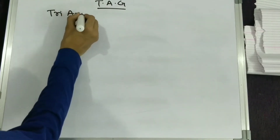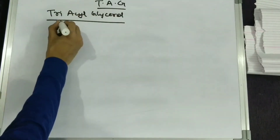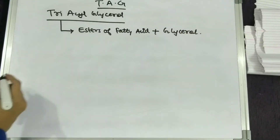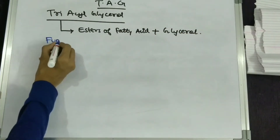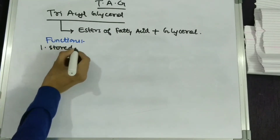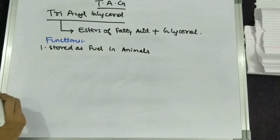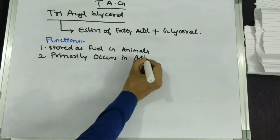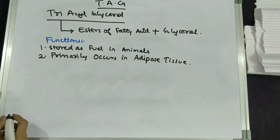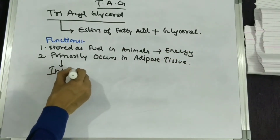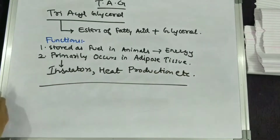Now let's study about TAG — triacylglycerol. It is made up of esters of fatty acid and glycerol. The functions of triacylglycerol include: it is stored as fuel in animals; it primarily occurs in adipose tissue; it is used as an energy source; and in adipose tissue it acts as an insulator for heat production.